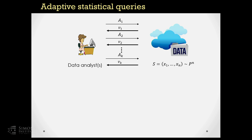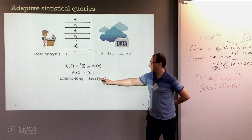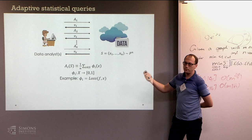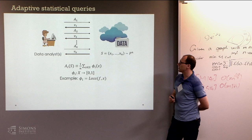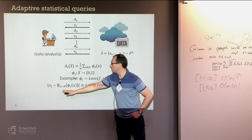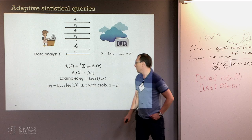Let's look at a relatively simple type of analysis as an example. Each analysis will ask for the mean of some function phi of a data element — a real value between 0 and 1 — on the dataset. So just the empirical mean of some function; for example, that function could be the loss of the model, giving us the test error. If you run this analysis on fresh data, the value obtained will be strongly concentrated around the expectation of phi on a sample drawn from the unknown distribution. Being close to running this analysis on fresh data means outputting a value close to that expectation, parameterized by accuracy tau with high probability 1 minus beta.